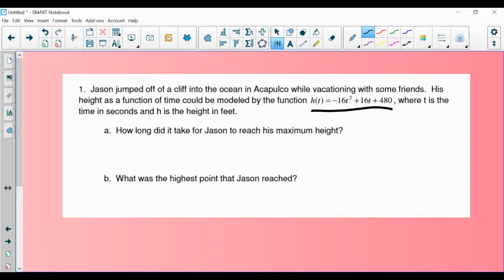So the first question says, how long did it take for Jason to reach his maximum height? Well, if we are to imagine what this equation is going to look like, remember, because it's negative, it's going to be an upside down U-shaped graph. And what it's going to look like, as I drew over there, basically, we got Jason over here on a cliff. He's going to jump up in the air a little bit and he's going to come back down.